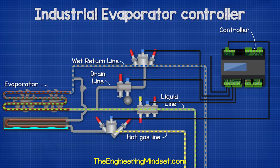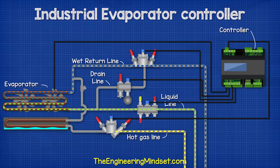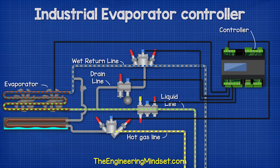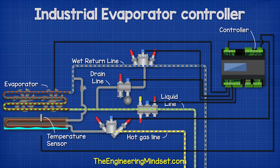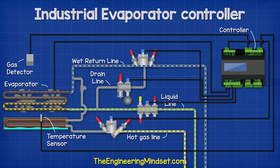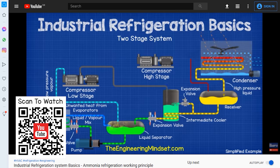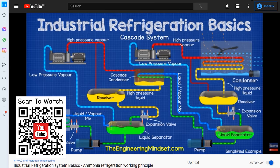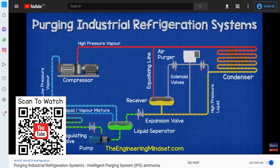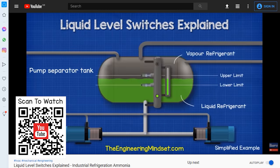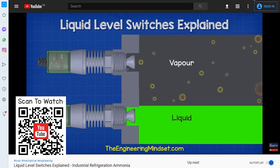Next we connect the evaporator fans to the controller, letting us control the rotational speed to suit the cooling demand. As we're exchanging thermal energy we need feedback, so we also connect a temperature sensor to the controller. Additionally, we can connect a gas detector for added safety. By the way, we've also covered the various types of industrial refrigeration systems in previous videos — links in the video description below.